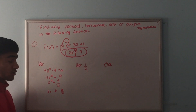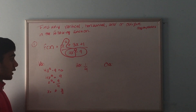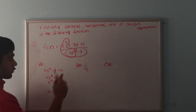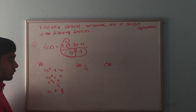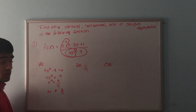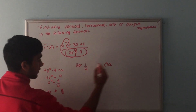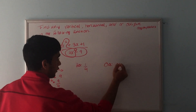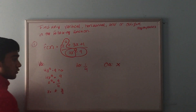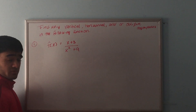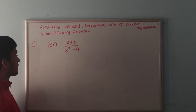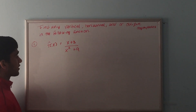For the oblique asymptote — remember, the horizontal asymptote and the oblique asymptote are mutually exclusive, meaning if there is a horizontal asymptote, there is no oblique asymptote. So in this case there is no oblique asymptote. The second question is f(x) equals x plus 3 over x squared plus 9.